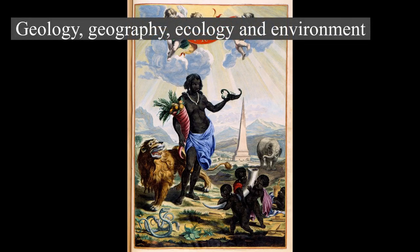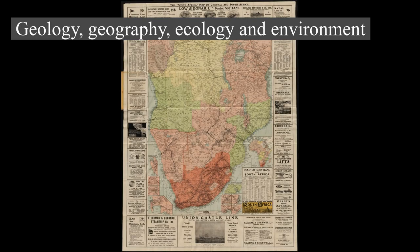Geology, geography, ecology, and environment: Africa is the largest of the three great southward projections from the largest landmass of the Earth. Separated from Europe by the Mediterranean Sea, it is joined to Asia at its northeast extremity by the Isthmus of Suez, which is transected by the Suez Canal, 163 km (101 miles) wide. Geopolitically, Egypt's Sinai Peninsula east of the Suez Canal is often considered part of Africa as well.